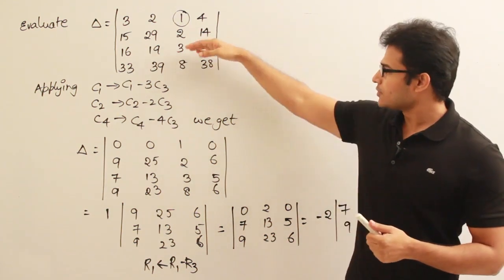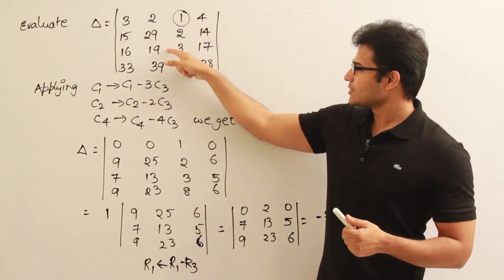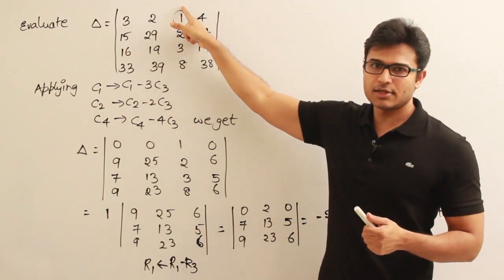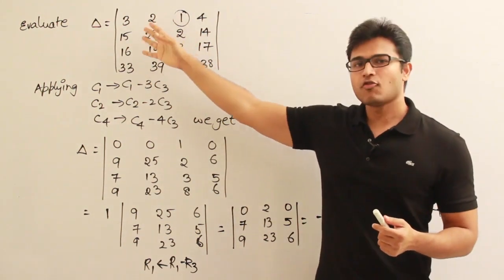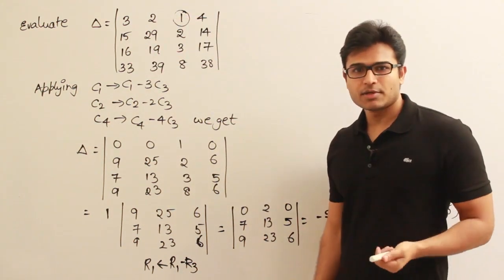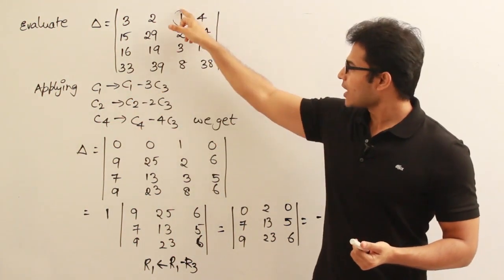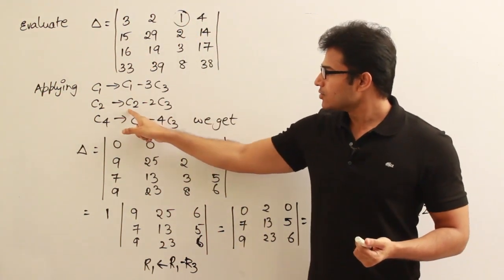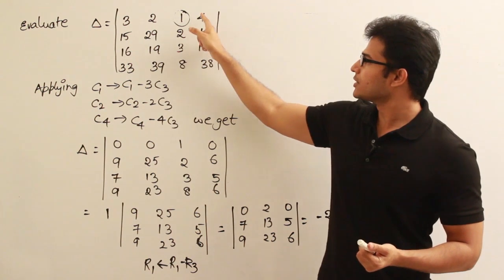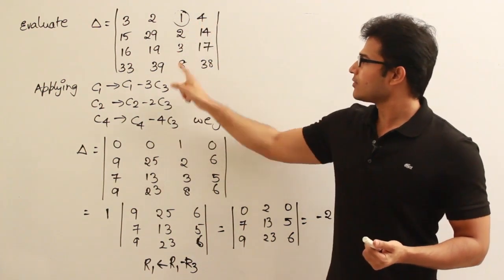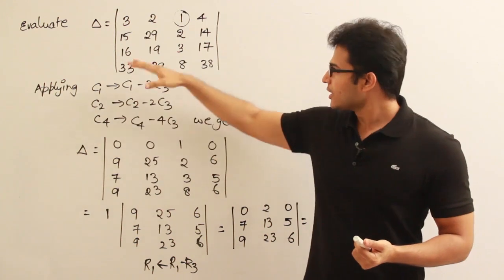By doing such operations, we can actually make most of the elements zero in a row. I am replacing column 1 with column 1 minus 3 into column 3, which means I will multiply this entire column with a constant 3 and then subtract it from this. C2 is replaced with C2 minus 2*C3, and C4 is replaced with C4 minus 4*C3, which means I am multiplying this with 4 and subtracting from here.